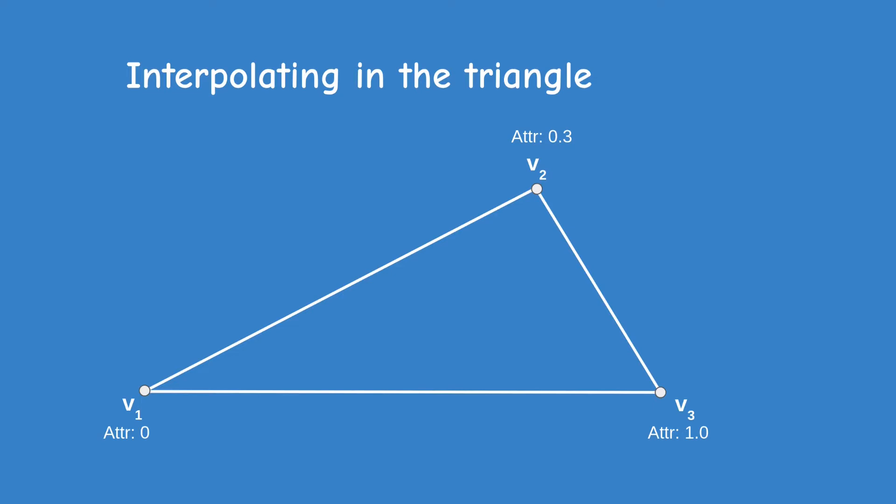The rasterizer knows how to map these to window pixels and it also knows how to find all the pixels that are enclosed within the triangle. Now it needs to interpolate that attribute and provide each pixel with its own interpolated value.